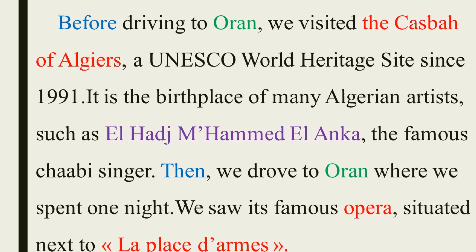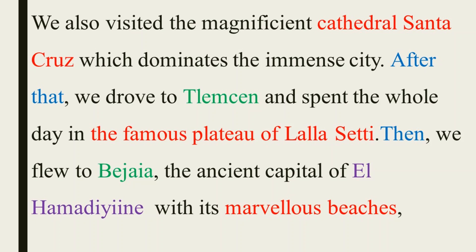Before driving to Oran, we visited the Casbah of Algiers, a UNESCO World Heritage Site since 1991. It is the birthplace of many Algerian artists, such as Al-Haj Mohamed Al-Anka, the famous chaabi singer. Then, we drove to Oran where we spent one night. We saw its famous opera situated next to La Plaza. We also visited the magnificent Cathedral of Santa Cruz, which dominates the immense city. After that, we drove to Tlemcen and spent the whole day in the famous plateau of Lalla Setti.